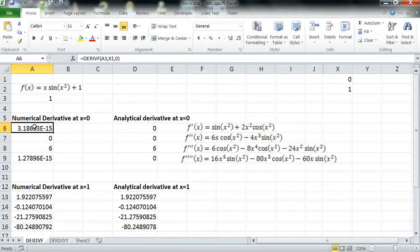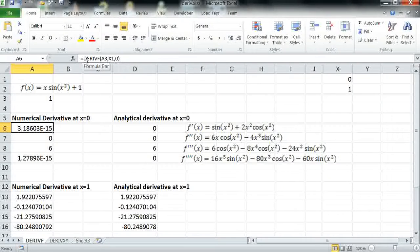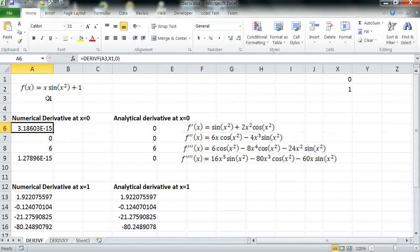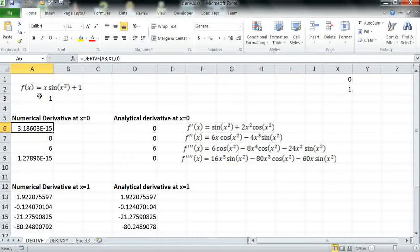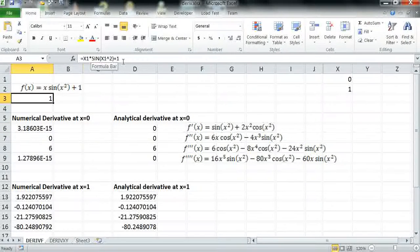So in cell A6, I write the formula for DerivF, and here I reference A3, which has the definition of my function f(x). As you can see here, A3 has x1 times sine of x1 squared plus one.